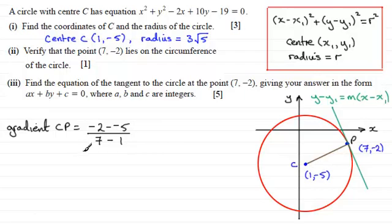And that answer is that, for my version, we've got minus 2 plus 5, which is 3. And that's divided by 7 minus 1, which is 6. So that's going to come to 1 half then.